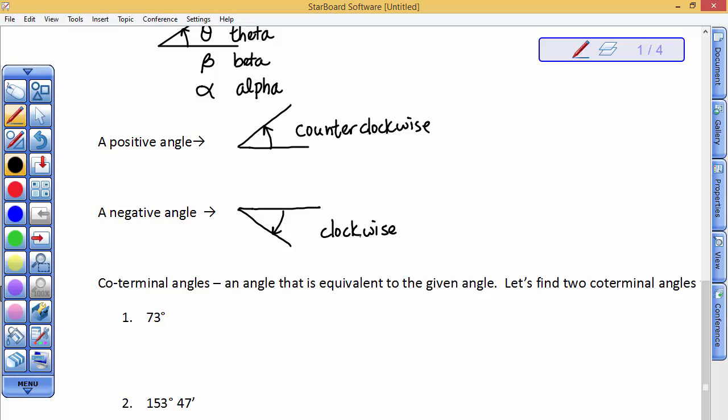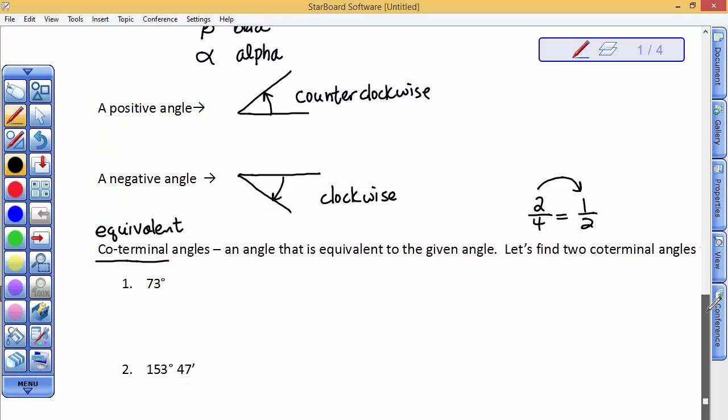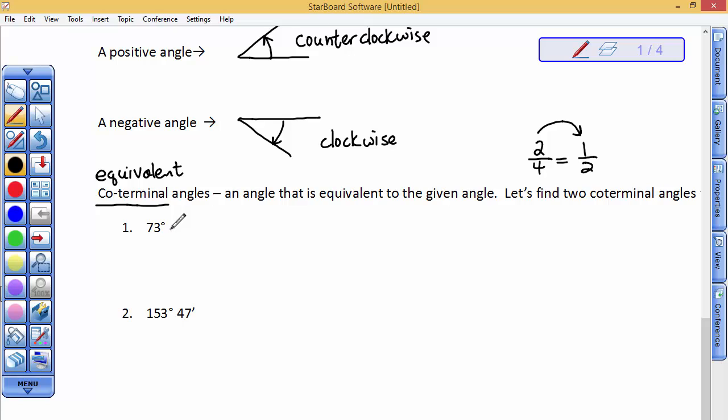So, our next piece is to just ask you to find equivalent, coterminal means equivalent angles. The same size, but may be described in a different way. For example, the fraction 2 fourths can be reduced to the fraction 1 half. They're the same size, but they can be represented in two different ways. So, I would like you to understand how to find a coterminal angle to a 73 degree angle.